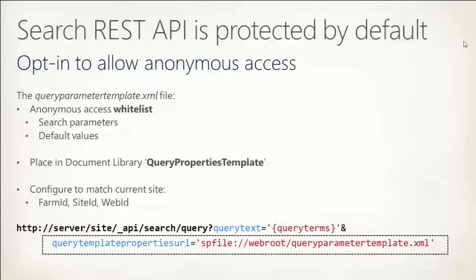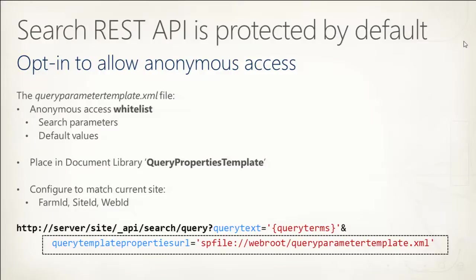How many of you have played with SharePoint 2013 from beta 2? There is one change we made from beta 2 to the RTM release: the search API for any public-facing site open for anonymous access — in beta 2, the search API was also open, but now it's not. We've taken that away, so it's protected by default. In order to open that up, you basically have to create a template file that you put in a search document library — a properties template — which explains to SharePoint exactly what search parameters you'd like to open up for anonymous users and what default values you want them to have. You also have to use that in the REST calls to tell SharePoint which template file to utilize.